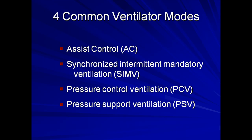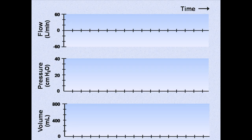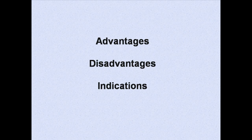To best understand the differences between these four ventilator modes, I will first provide a brief description of the mode as well as its possible options for the trigger, control, and cycling variables. I will then display graphs of airflow, airway pressure, and volume as functions of time. Each hash mark along the horizontal axis will represent one second. PEEP for all examples will be set at five centimeters of water. Lastly, I will list the advantages, disadvantages, and indications for each mode.